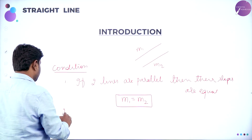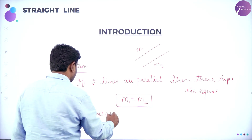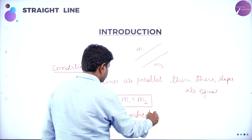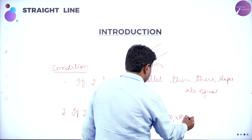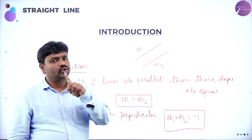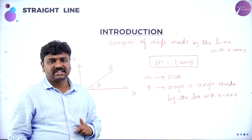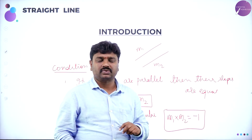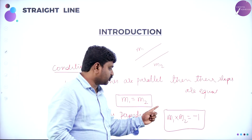Second case: if two lines are perpendicular, then the product of slopes is minus 1. M1 into M2 gives you minus 1. These are the two important conditions. In summary: tangent of angle made by the line with X-axis is slope. Slope of line joining points is Y2 minus Y1 by X2 minus X1. If two lines are parallel, slopes are equal. If two lines are perpendicular, product of slopes is minus 1.